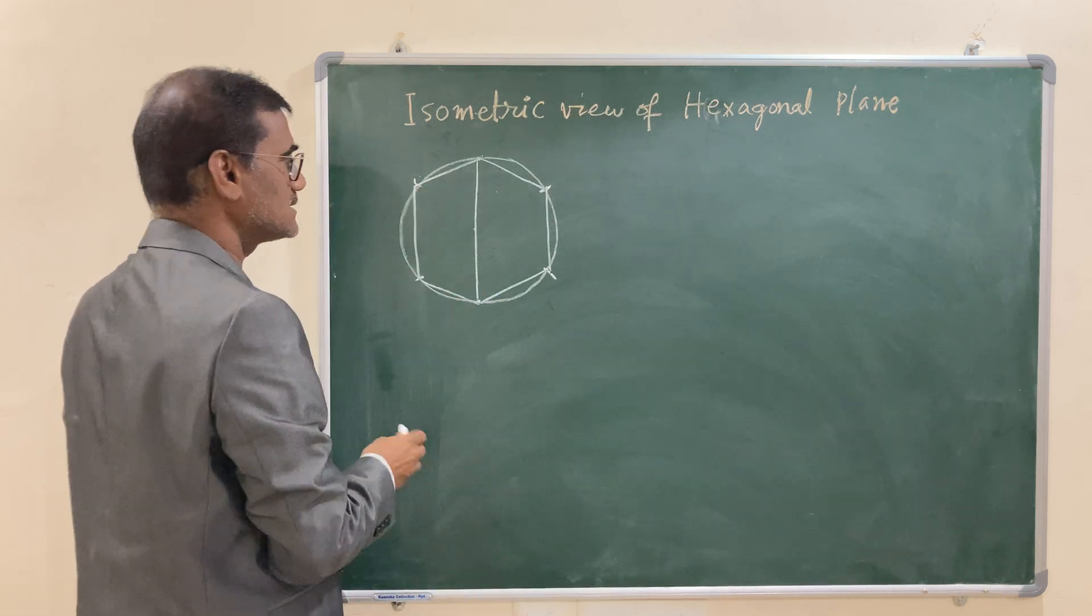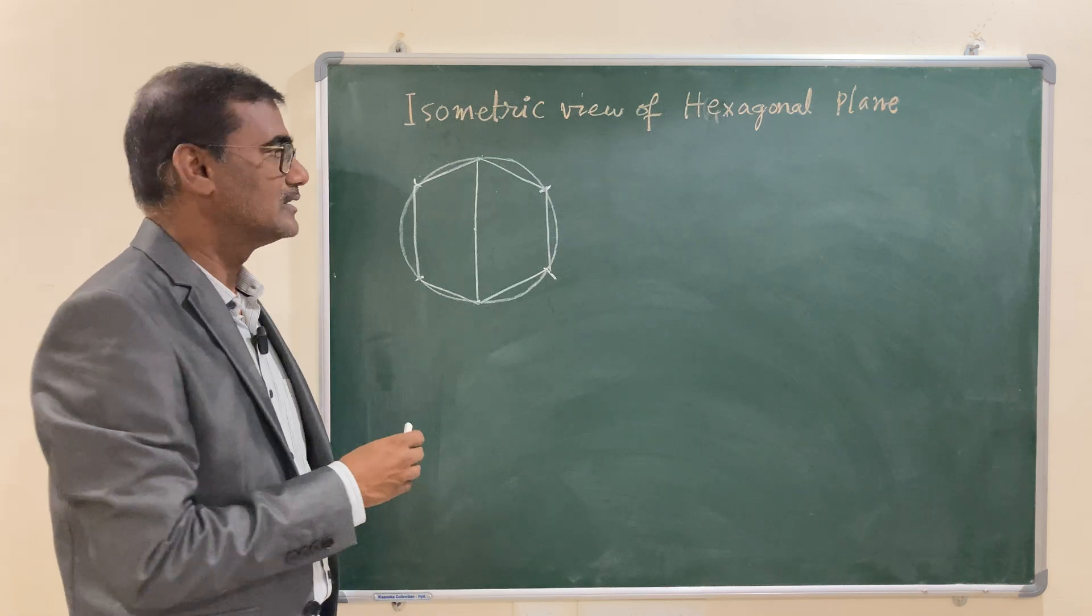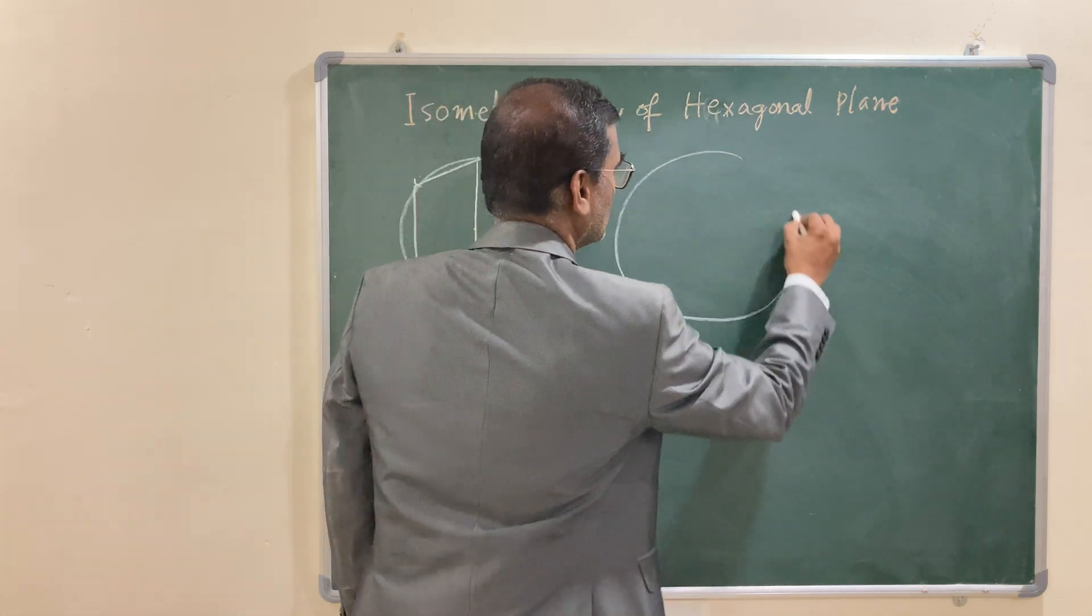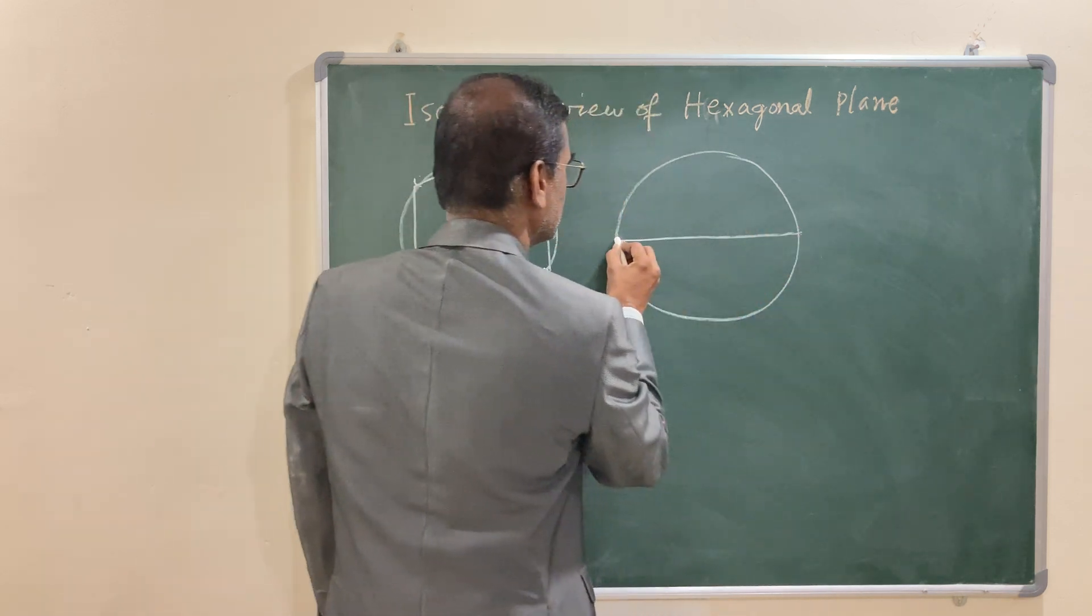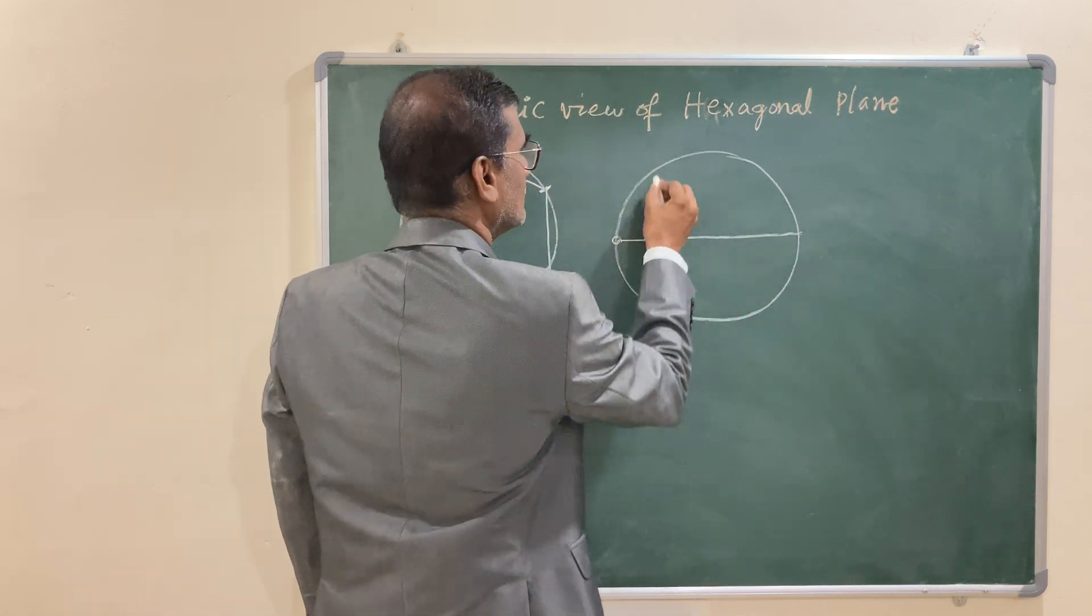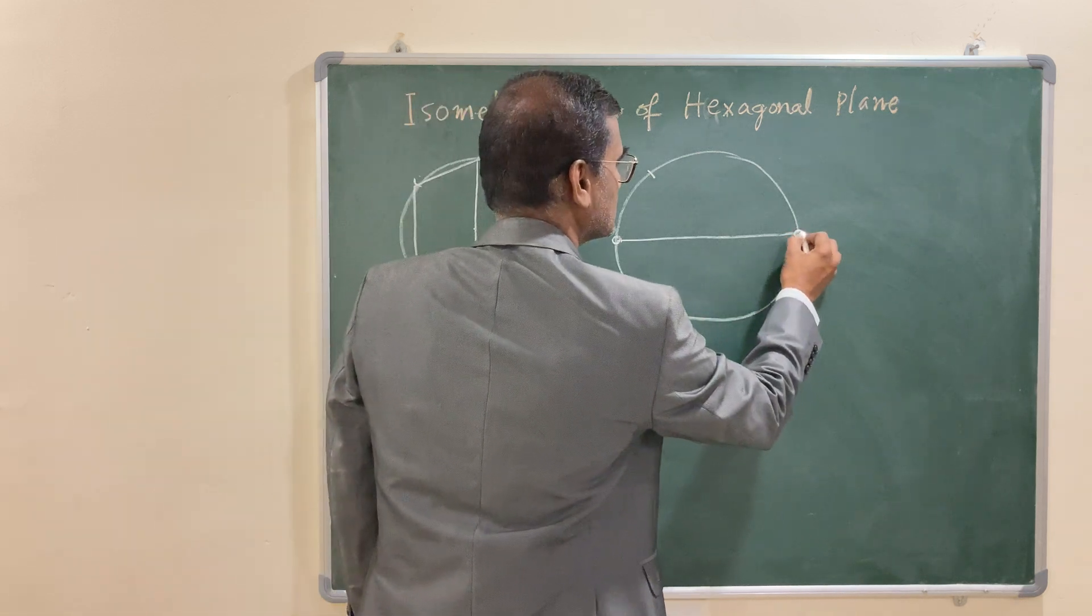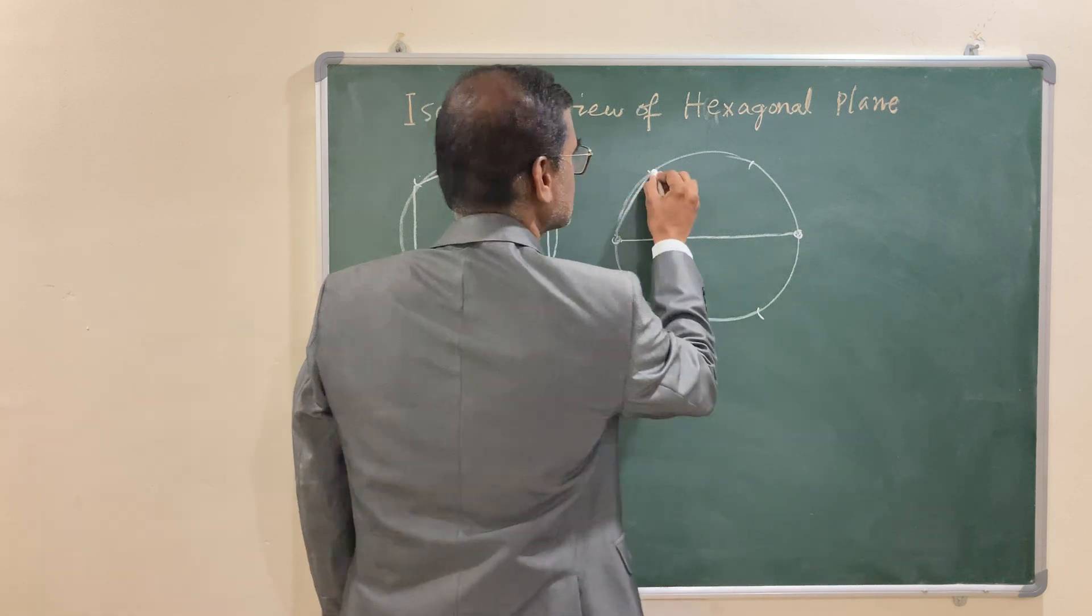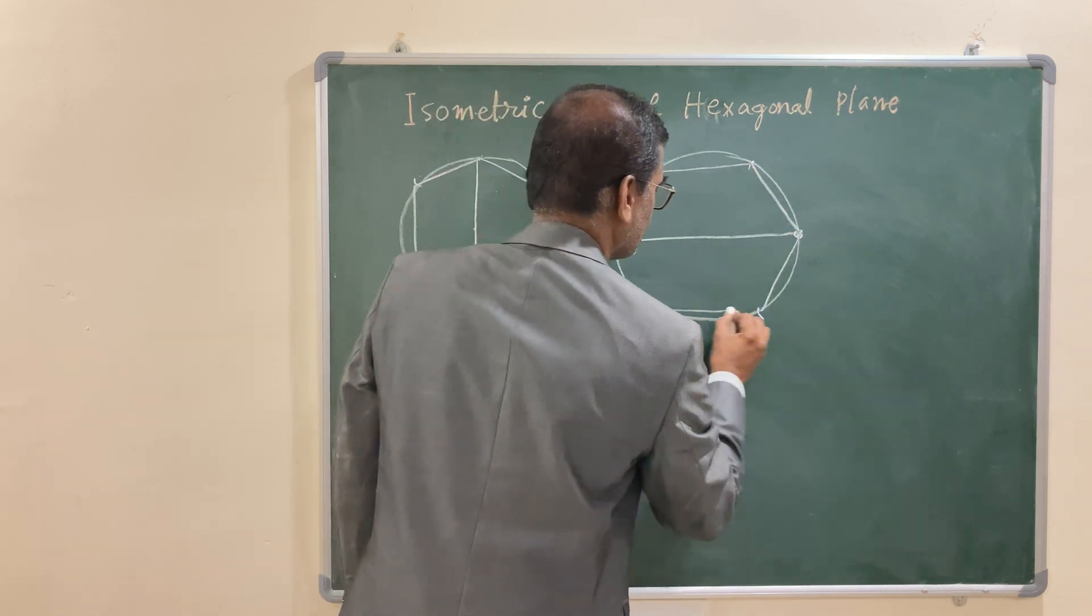So, in this, you can see that as you have taken the vertical diameter, the edge is vertical. If you want to keep that edge as horizontal, then obviously, you have to take horizontal diameter. And this end as center with radius same 30 mm either of the side, so that you can complete the hexagon keeping that one of the edge horizontal.